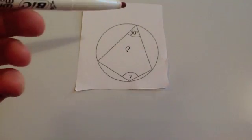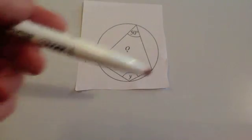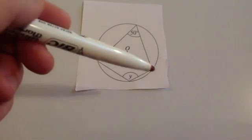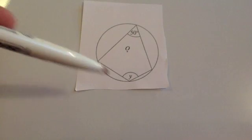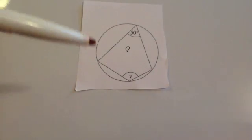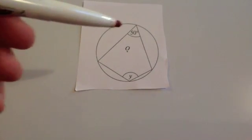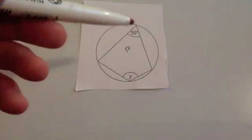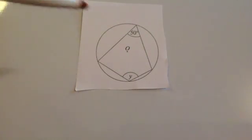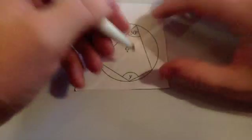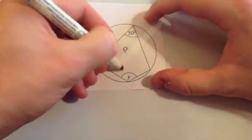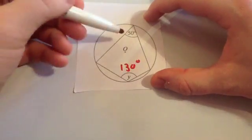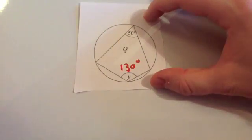Here we've got a cyclic quadrilateral — four corners all on the circumference of the circle. Therefore, the opposite angles in the cyclic quadrilateral will add to 180. So y here will be 130 degrees because these two will add to 180.